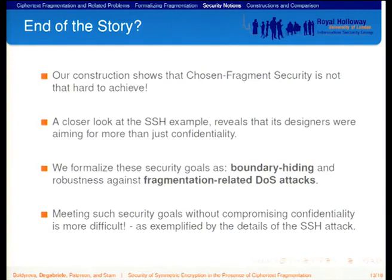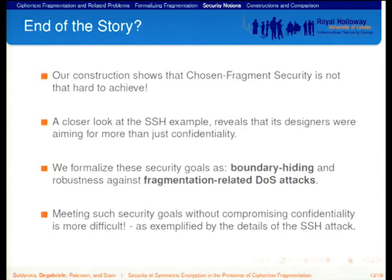This construction shows that it's not so hard to achieve security in the fragmented setting. But this is not the end of the story, because if we go back and look at SSH, we find that its design was actually trying to achieve more than just confidentiality. We identified two further goals: boundary hiding, and robustness against fragmentation-related denial-of-service attacks. Meeting these goals without compromising confidentiality is more difficult. For example, the countermeasure SSH introduces to achieve boundary hiding is what actually makes the SSH attack possible, and the countermeasure SSH uses to limit denial-of-service attacks makes the attack even more efficient. All three security notions are pulling in different directions.